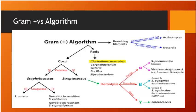The gram positive algorithm is taken from First Aid USMLE Step 1. We classify gram positives as cocci and bacilli. The gram positive bacilli mnemonic is BCL2 — Bacillus, Listeria, Corynebacterium, and Clostridium. You can make your own mnemonic to remember these four.